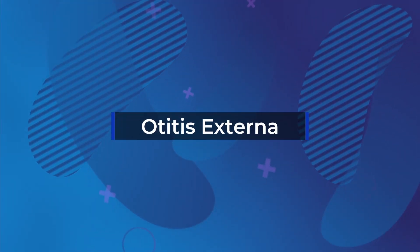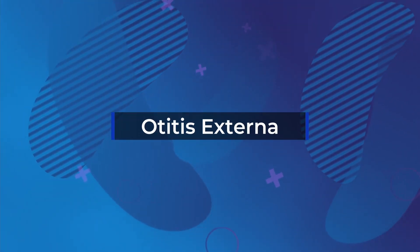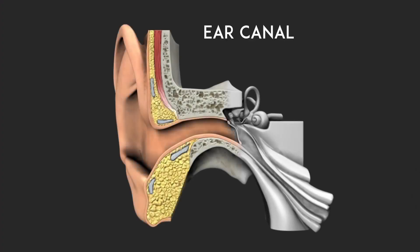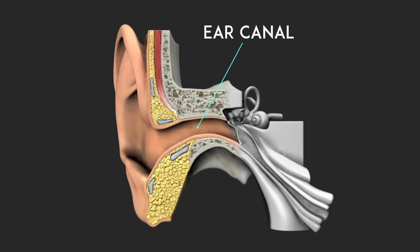Otitis literally means inflammation and externa tells us that it's confined to the external parts of the ear canal only, and it doesn't affect the eardrum. The ear canal is a narrow, warm, blind-ended tunnel which makes it a perfect environment for germs to grow. Otitis externa is caused by an infection of the skin of the ear canal.